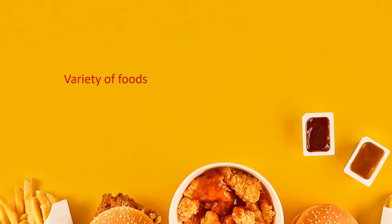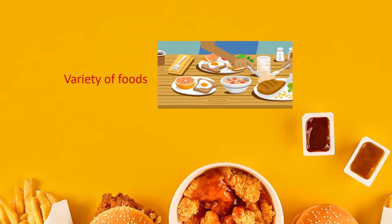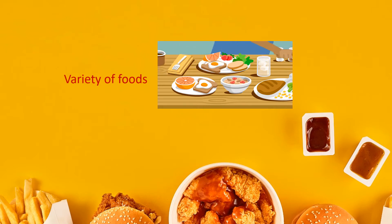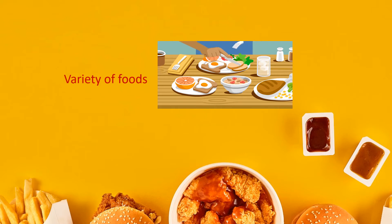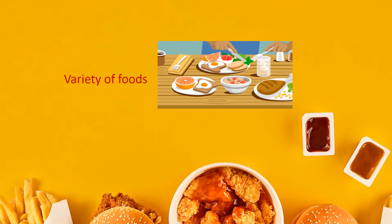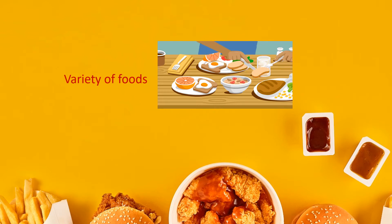The first topic we discussed was the variety of food. Why do we need to eat a variety of food? So that our body gets enriched with all the nutrients. You all like to eat a variety of food. If I give you a paratha for breakfast and for dinner also I give you a paratha, would you like to eat that food? No. We like to eat a variety of food, and variety of cooked food is also good for our health.